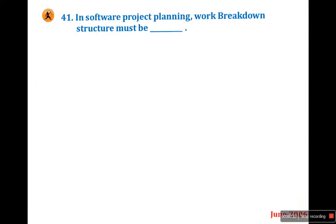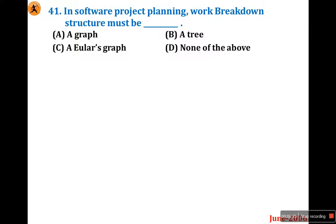Question number 41: In software project planning, work breakdown structure must be — a graph, a tree, an Euler graph, or none of the above. The answer is graph, because in project development you may need a cycle. A tree is an acyclic graph, so it is not appropriate. An Euler graph is also a type of graph but not appropriate here. So the option is A.